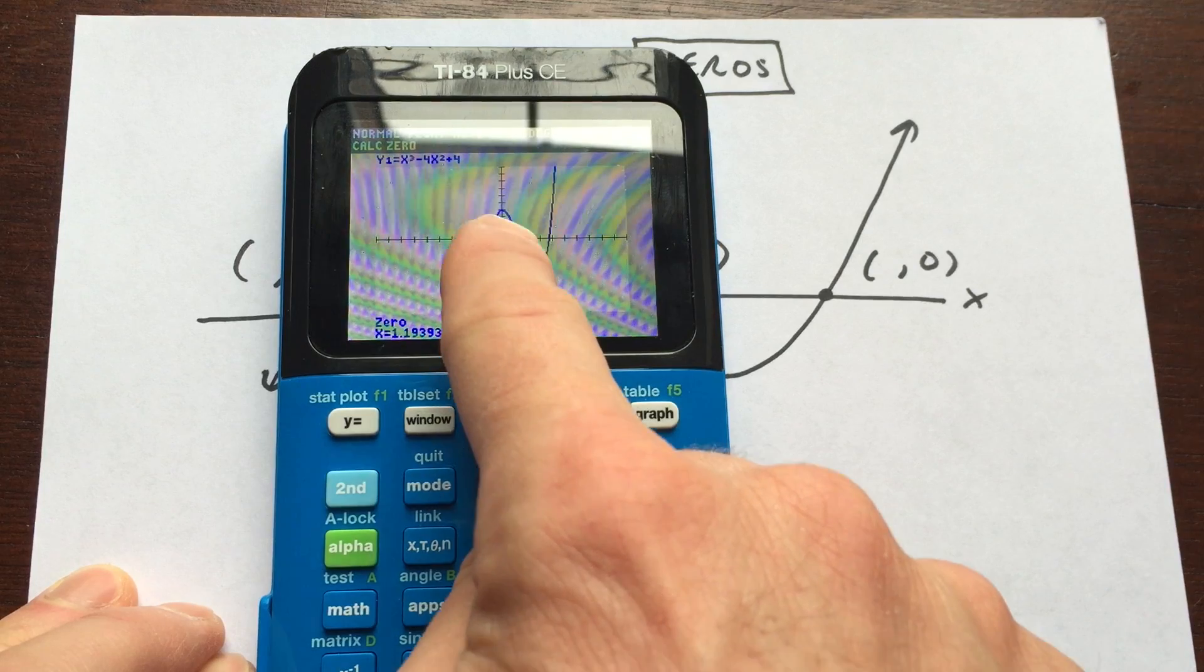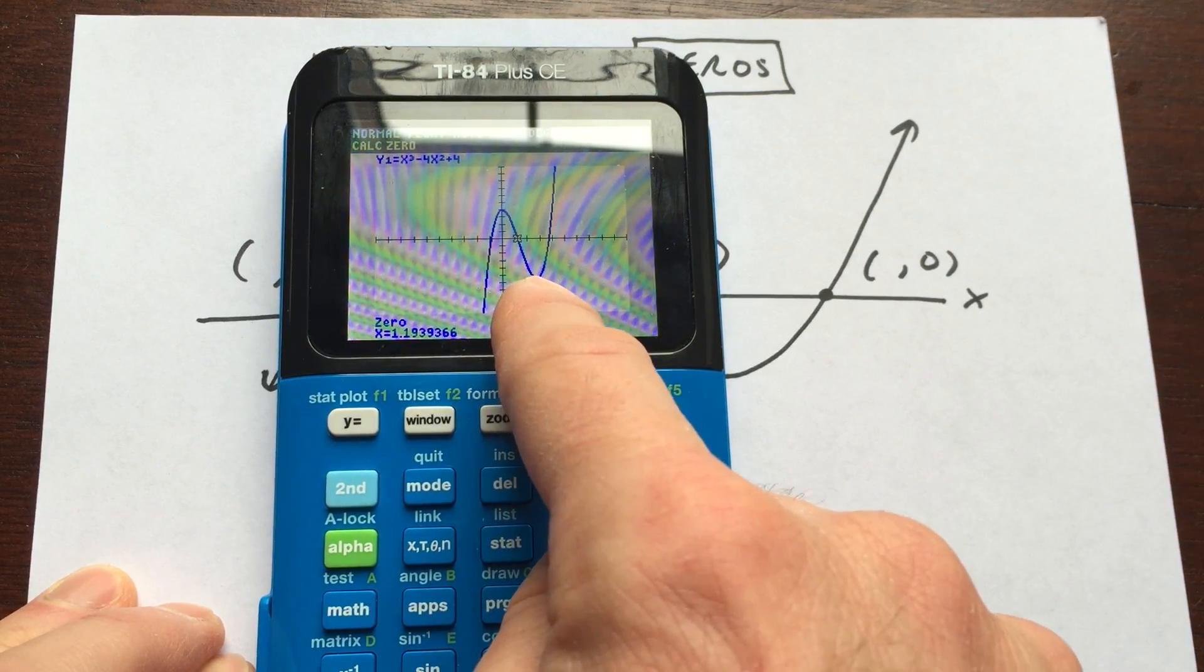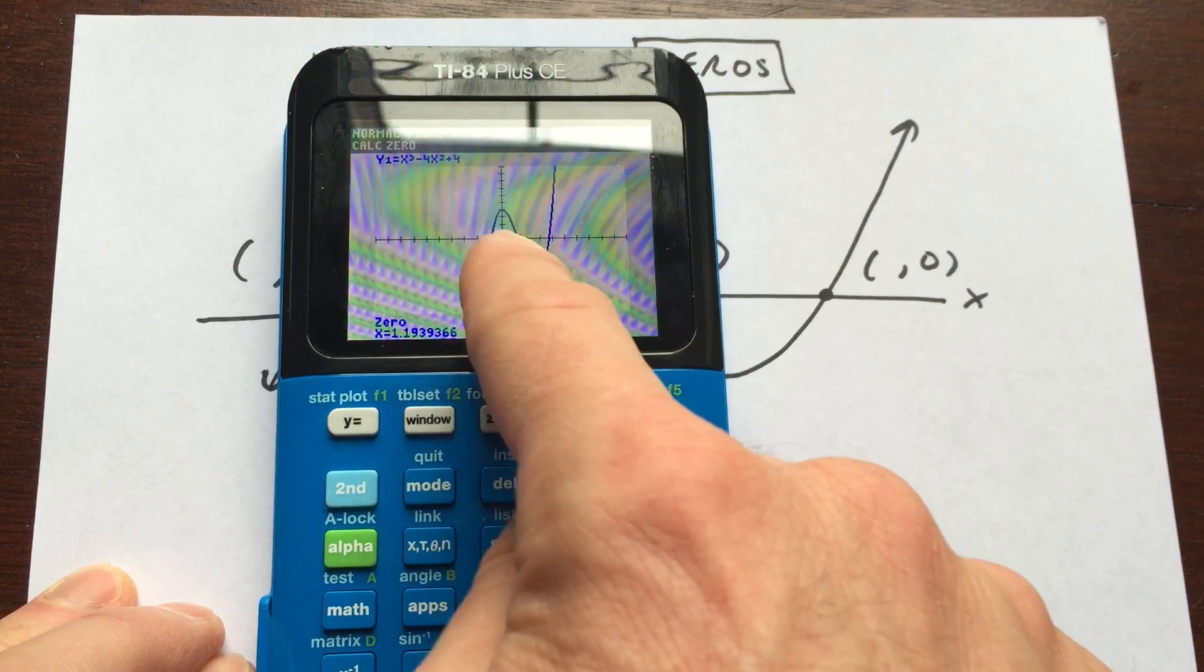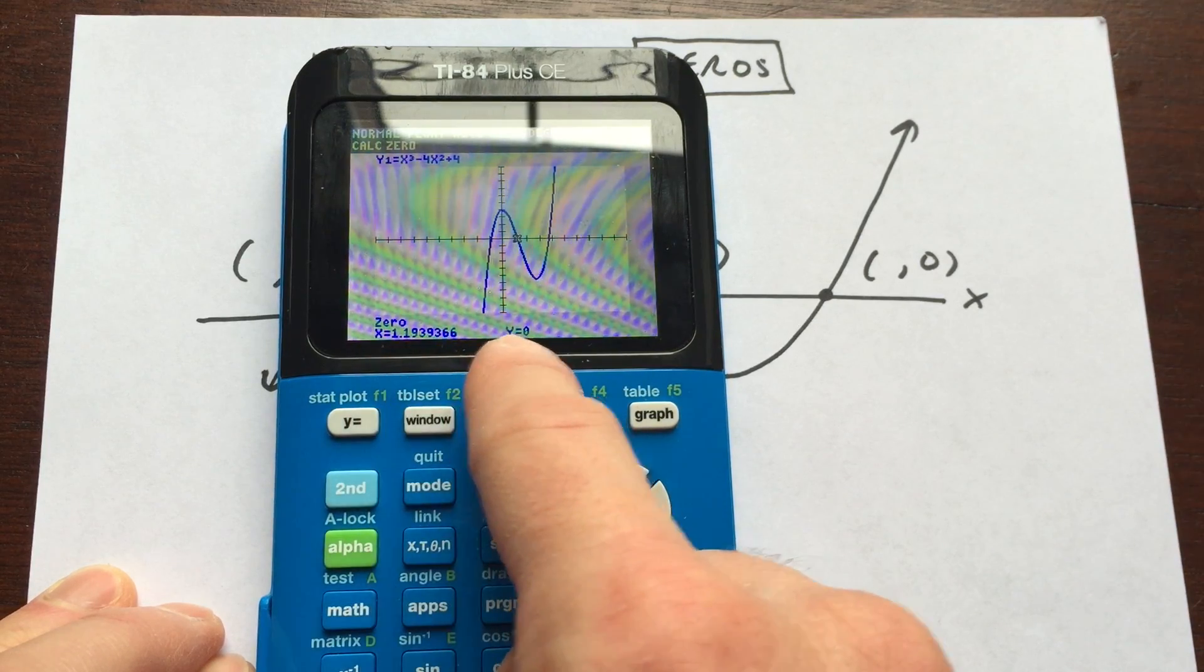It's in between those two points that we picked previously, the left bound and the right bound. And so you want to make sure one's above the x-axis and one's below. One's to the left, one's to the right, and it's going to find that zero. And you know you've got it because you can see y equals zero.